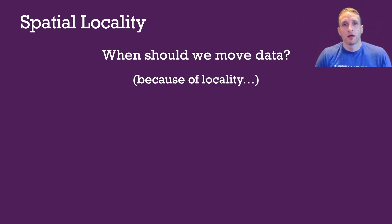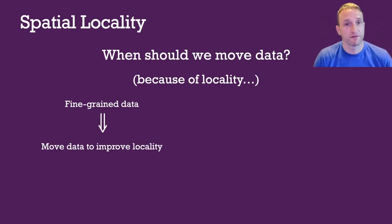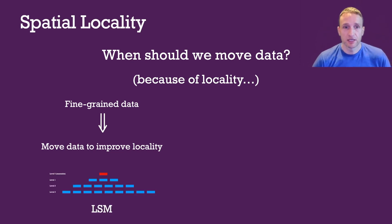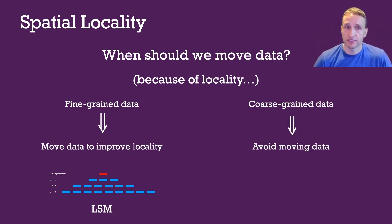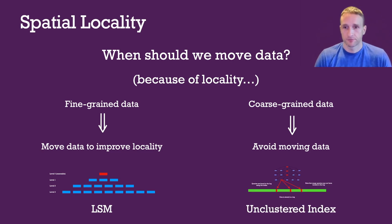So back to our data structural question of when we should move data because of locality. Fine-grained data is going to lead us to want to move data if it'll improve locality, and it's generally worth the cost of doing so. An example of a data structure that does this is the log-structured merge tree, or LSM. With coarse-grained data, we should generally avoid moving data to improve locality because the cost of poor locality is lower. An example of a data structure that does this is the unclustered index.